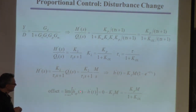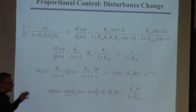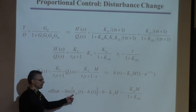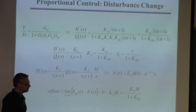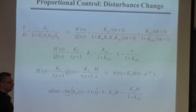Take the difference between the set point and the actual level with this response. Take the limit of this difference as t goes to infinity. If that thing is not zero, there's offset. Now, the set point is not changing. If a variable is not changing in deviation world, that means it's zero.